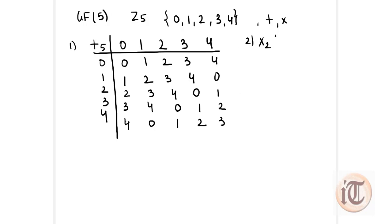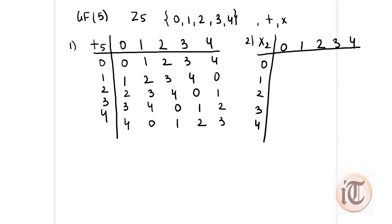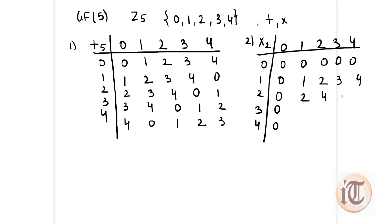Similarly, the second matrix is multiplication modulo 5, with elements 0, 1, 2, 3, 4 on both axes. Multiplying by 0 gives all zeros. Then 1×1=1, 2×1=2, 3×1=3, 4×1=4. For column 2: 1×2=2, 2×2=4, 3×2=6 so 6 mod 5=1, 4×2=8 so 8 mod 5=3. For column 3: 3×1=3, then 1, 4, 2. For column 4: values are 4, 3, 2, 1. This is how we calculate multiplication modulo 5.